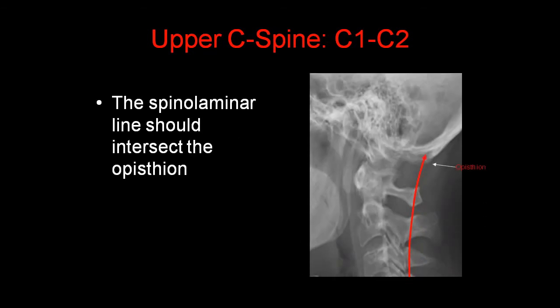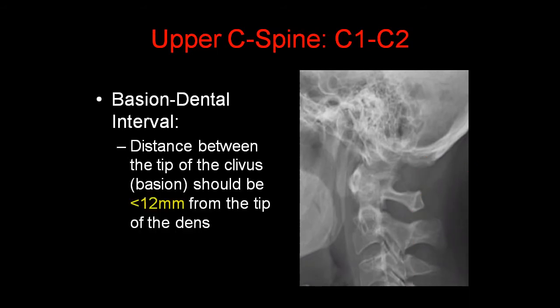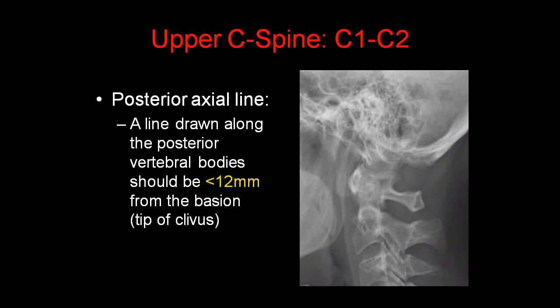In addition, the spinal laminar line should always intersect the opisthion, which is the bony protuberance at the base of the occipital bone. Also look at the basion-dental interval — the distance between the tip of the clivus (the basion) and the tip of the dens — which should be less than 12 mm. Also look at the posterior axial line, drawn along the posterior vertebral bodies, which should also be less than 12 mm from the tip of the basion.